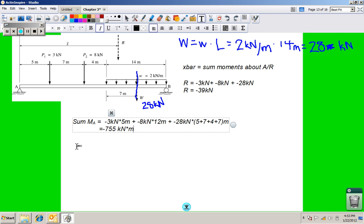So then from there we want to find x bar. And x bar is going to be equal to that negative 755 kilonewtons times meters divided by the negative 39 kilonewtons we found earlier. So when I divide by 39, x bar is equal to 19.4 meters.